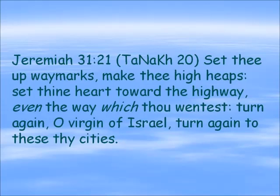One of the ways that the rabbis tie Virgo to repentance is through Jeremiah 31:21: Set thee up waymarks and make thee high heaps, set thine heart toward the highway, even the way which thou wentest. Turn again, O virgin of Israel, turn again to these thy cities — that the virgin Israel would repent. So they tie this repentance and the virgin together through this verse in Jeremiah.